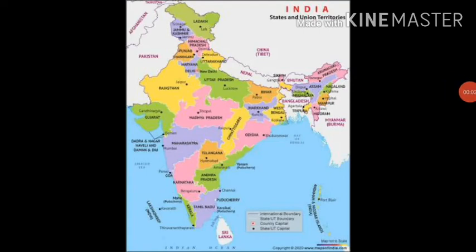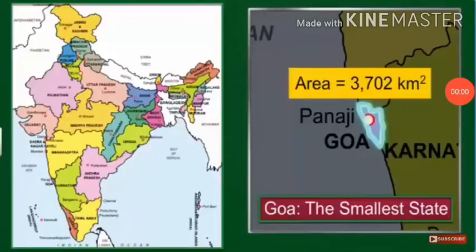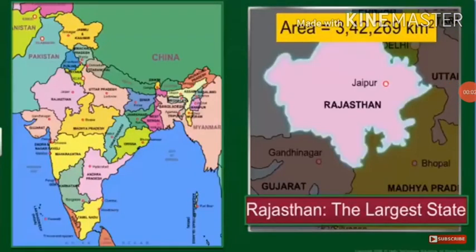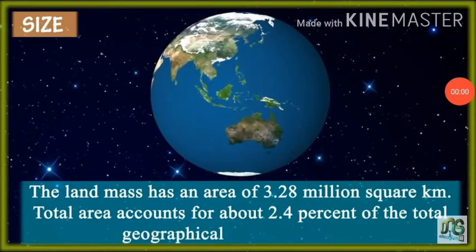After independence, due to reorganization, India is divided for administrative purposes into 28 states and 8 Union territories. According to area, the smallest state is Goa and the largest state is Rajasthan. The landmass has an area of 3.28 million square kilometers, and India's total area accounts for about 2.4% of the total geographical area of the world.